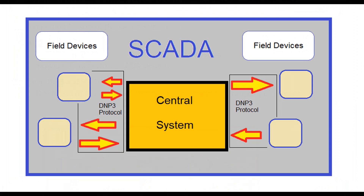What actually is DNP3 protocol? DNP3 is a communication protocol used primarily for SCADA applications in the electrical power industry. SCADA stands for Supervisory Control and Data Acquisition. A SCADA protocol is used to communicate between a central location and a set of field devices. Communication can be serial, such as over telephone lines, or can utilize a network. DNP3 protocol works the same in both cases, so the communication media for this class is not relevant.